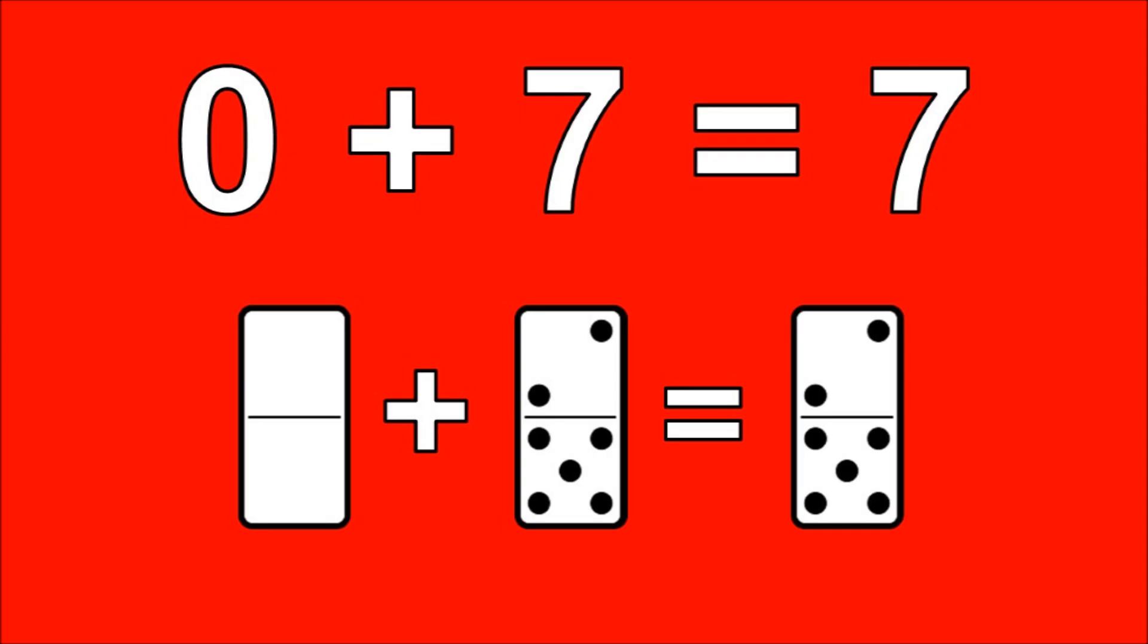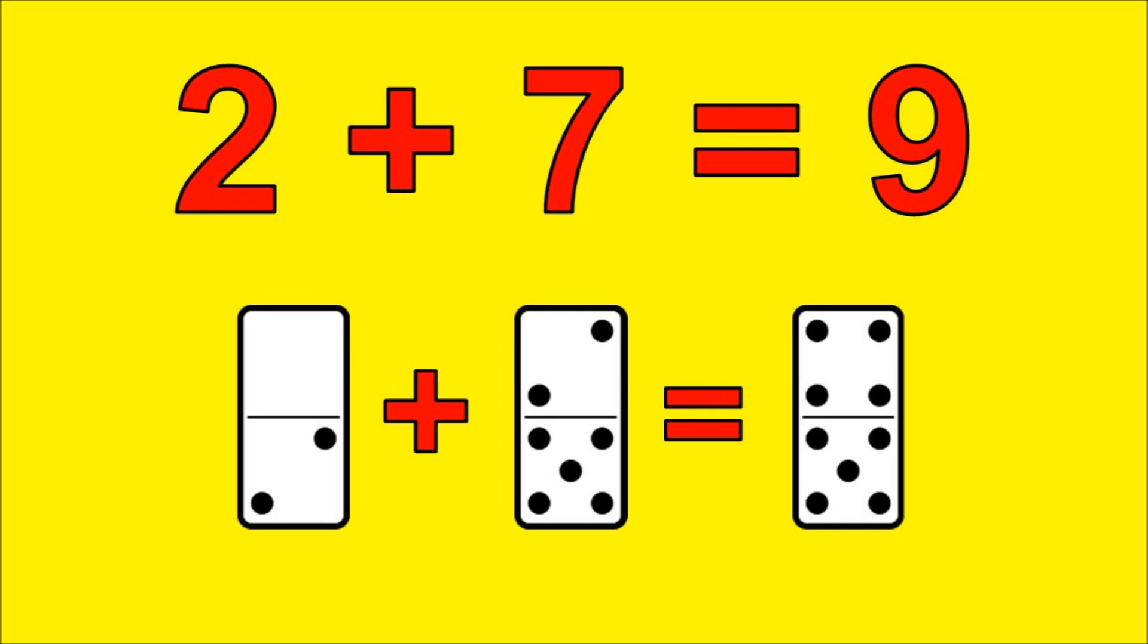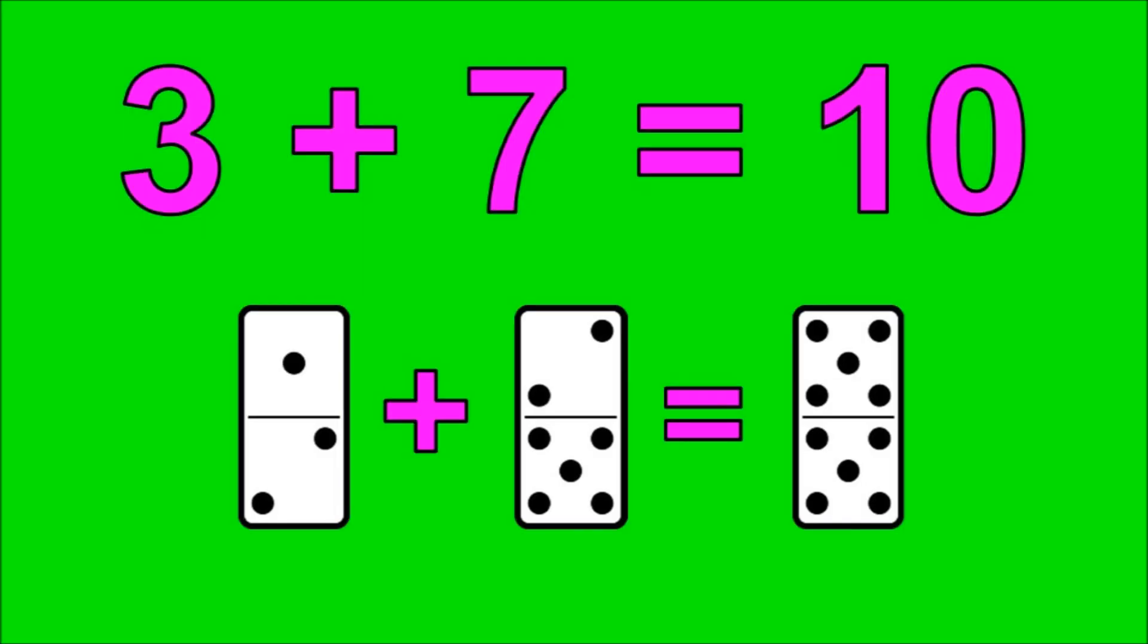0 plus 7 is 7, 1 plus 7 is 8, 2 plus 7 is 9, 3 plus 7 is 10.